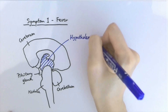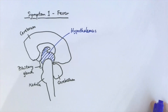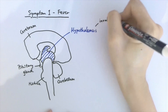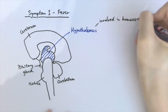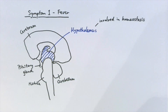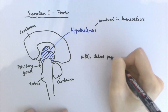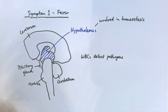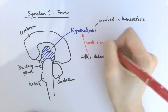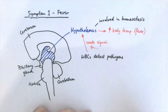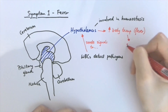The hypothalamus is at the base of the brain, near the pituitary gland, and has a crucial role in homeostasis — the maintenance of our internal environment through negative feedback. One of the things maintained by the hypothalamus is our core body temperature. When white blood cells detect pathogens in our body, they release chemicals to the hypothalamus to raise our body temperature, which slows down or even prevents the reproduction of the pathogens.